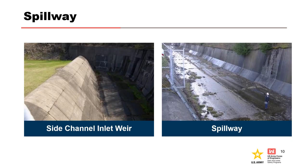The downstream slope is grass-covered with slopes ranging from 2 to 1 to 3 to 1. The spillway is a concrete-lined channel in the left abutment with a 250-foot long side channel inlet weir. The spillway is 2,209 feet long and 50 feet wide, and the walls and floor are anchored into bedrock.